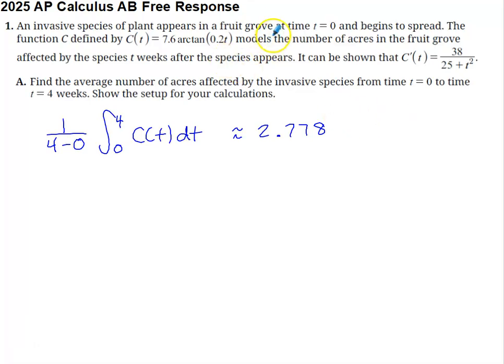Here's problem number one from the 2025 AP Calc AB FRQ set. It's a calculator question saying that an invasive species of plant appears in a fruit grove at time zero and begins to spread. Function C, defined here, models the number of acres in the fruit grove affected by the species t weeks after the species appears, and it can be shown that the derivative of C is equal to the fraction that you see here.